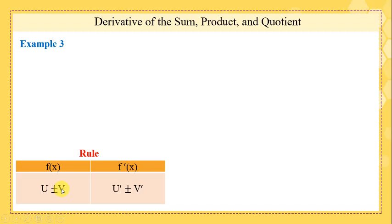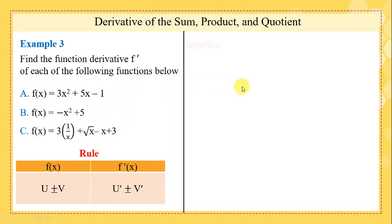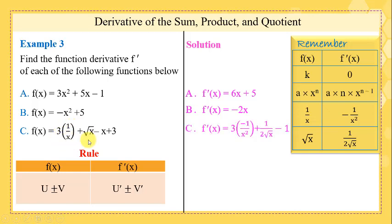If we have addition or subtraction of two functions or expressions, we simply distribute the derivative over them. For u + v or u - v, the derivative is u' + v' or u' - v'. Example: for 3x² + 5x - 1, apply the derivative and distribute: we get 6x + 5. For the second example: -2x, the constant +5 becomes zero, and the remaining terms give -1/x² + 1/(2√x).